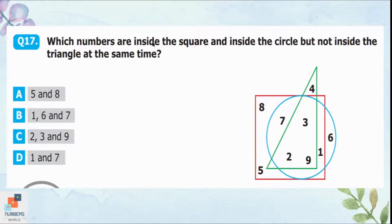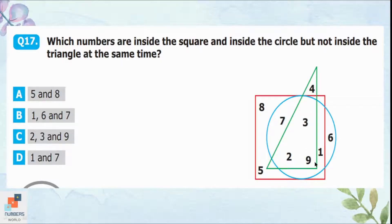Question 17: Which numbers are inside the square and inside the circle but not inside the triangle? Four is only in the triangle and six is only in the circle, so they are excluded. Eight and five are only in the square, so they are skipped. Three, two, and nine are in the square, circle, and triangle — but they are in the triangle so they are excluded. We are left with only seven and one, which are inside both the circle and the square. Option D is correct.